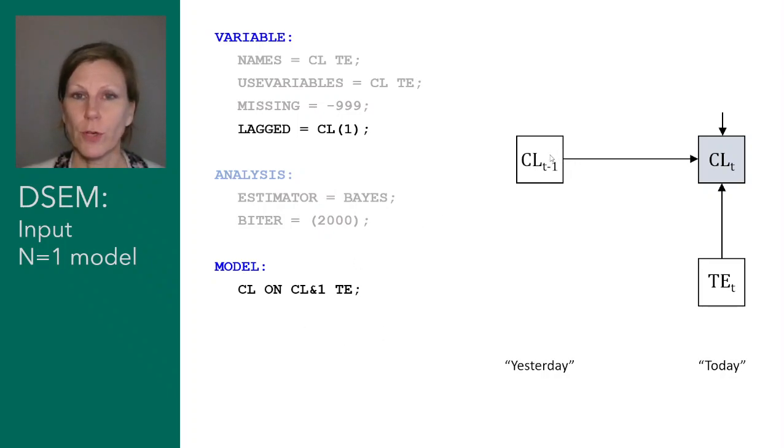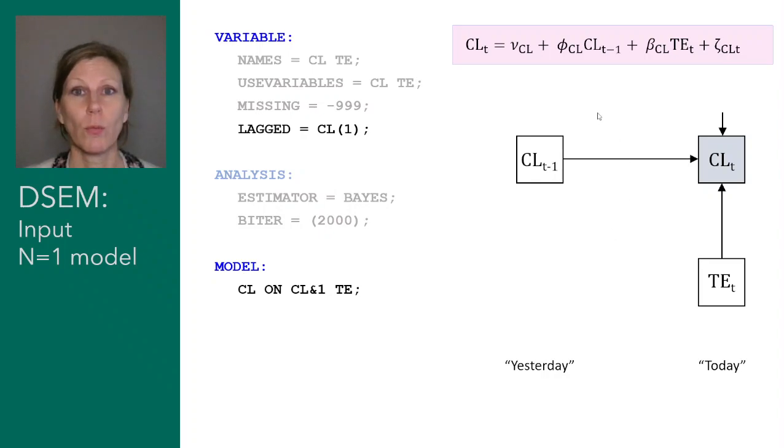This arrow from closeness yesterday to closeness today is often referred to as auto regression or inertia, and it implies that there's carry over from closeness experienced yesterday to closeness experienced today. We can also write this as a regression equation. So we have closeness today regressed on closeness yesterday, so t minus one, and also on tension today. And of course, there's still this residual part that cannot be predicted from the two predictors in our model.